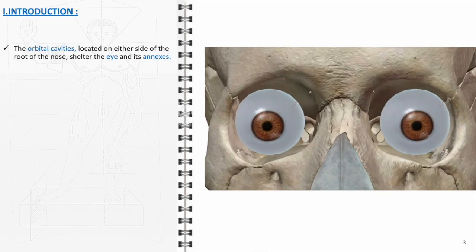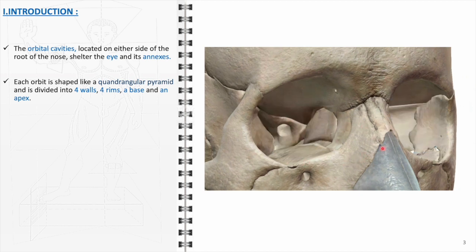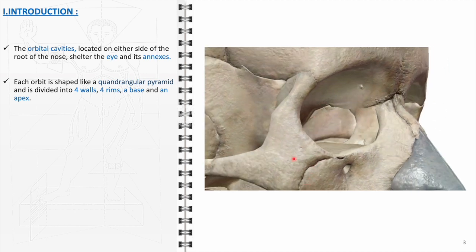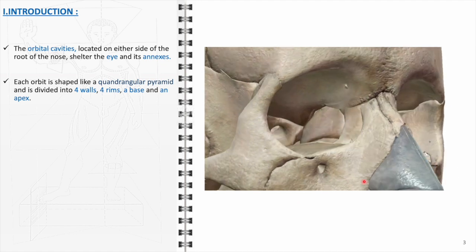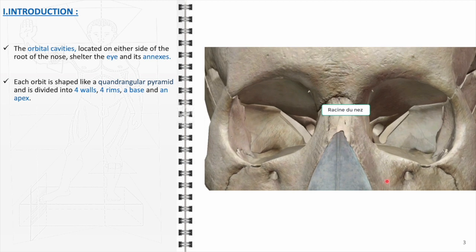The orbital cavities are pivotal anatomical structures in the human skull. Positioned on either side of the nasal root, these cavities serve as protective enclosures for the eyes and their associated structures, commonly referred to as annexes. These annexes include crucial elements like muscles, nerves, and blood vessels, all vital for the proper functioning of the visual system. Each orbital cavity is uniquely shaped like a quadrangular pyramid.